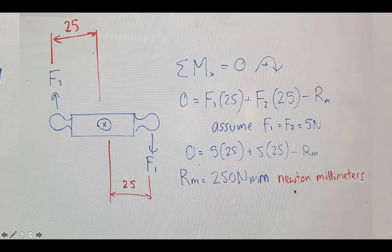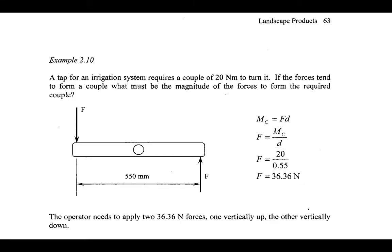Note: when I originally wrote this on the board I wrote 25 Newton millimetres, which is why it looks fuzzy - I corrected it in Photoshop. For the next example, we have a large farm tap for an irrigation system that needs 20 Newton metres to turn. We need to find the force required. We rearrange the formula so F equals the moment couple divided by the distance: 20 divided by 0.55 metres gives 36.36 Newtons. So the farmer needs to apply 36.36 Newtons in both directions to turn this handle.